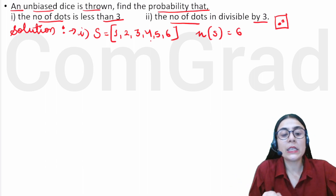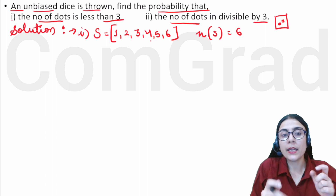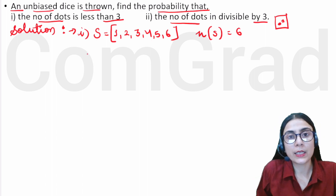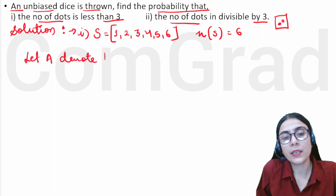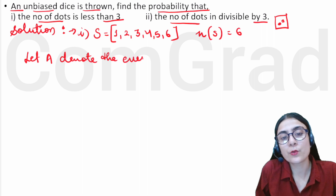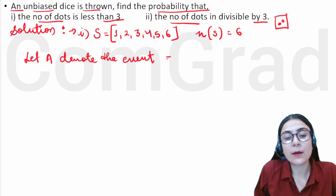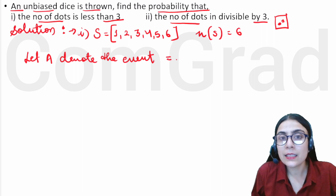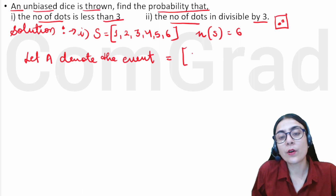The event A is where the number of dots is less than 3. Looking at the sample space, dots less than 3 means only 1 and 2 qualify. So let A denote this event.